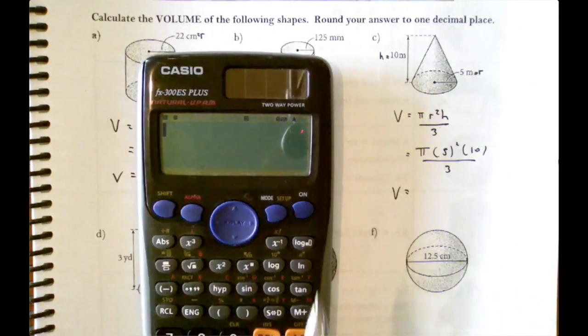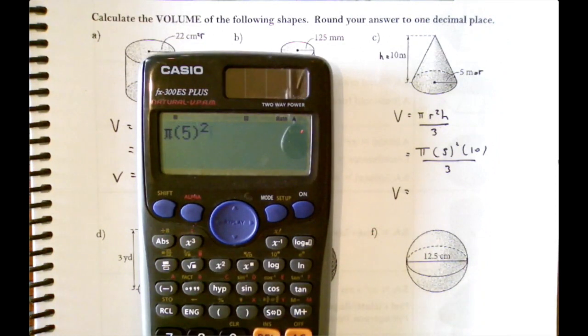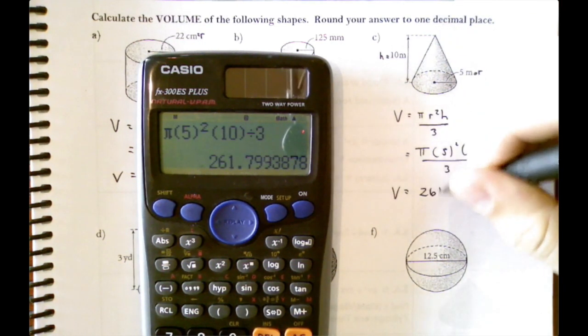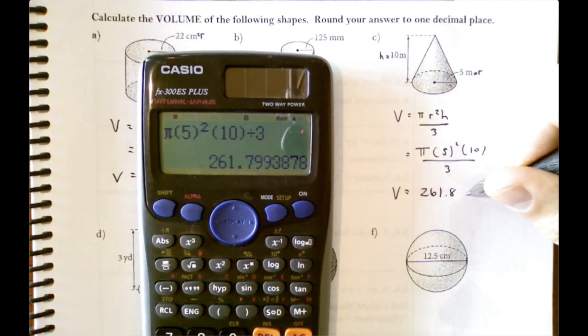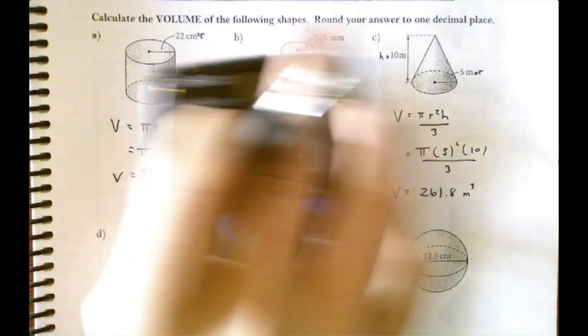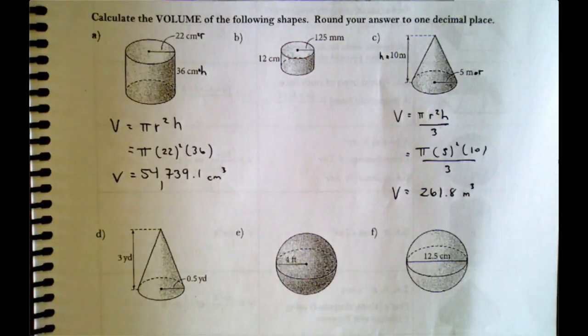Let's type this in. Shift to get to pi, five squared times ten divided by three. We get 261.8 and we're in meters, and it's volume, so we're meters cubed. There's another example of a cone you can try on your own.